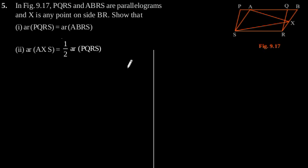Exercise 9.2, Question number 5. In figure 9.17, PQRS and ABRS are parallelograms and X is any point on side BR. Show that area of PQRS is equal to area of ABRS.